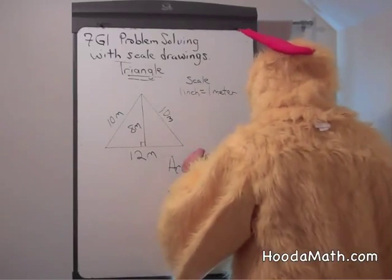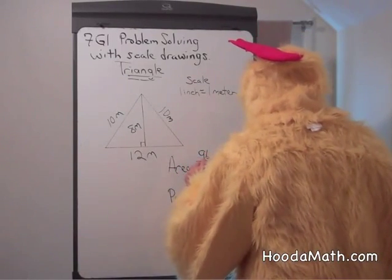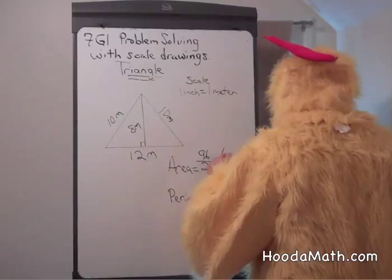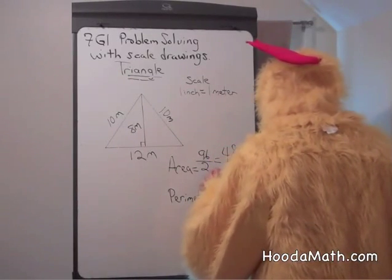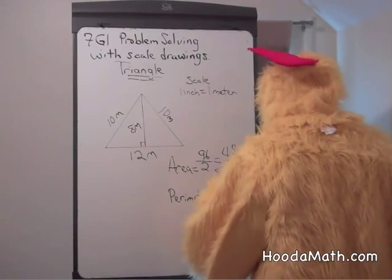8 times 12 is 96, divided by 2 equals 48 square meters.